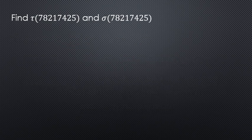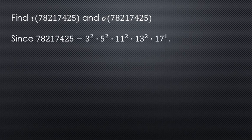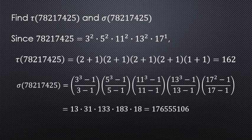The second problem is a little bit more involved. We're working with a significantly larger number. We're going to find tau and sigma for 78,217,425. First thing again: what is the canonical form for this number? It is 3 squared times 5 squared times 11 squared times 13 squared times 17 to the power of 1. Now that we have that form, we can do the same steps as in the previous problem.